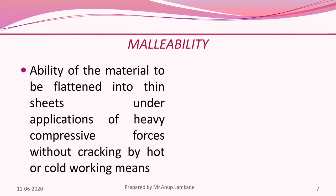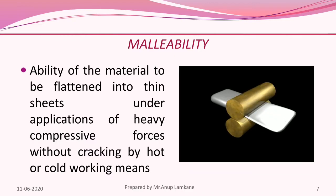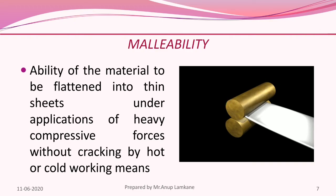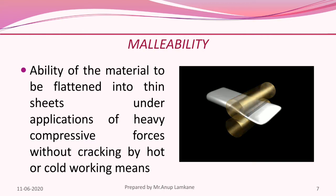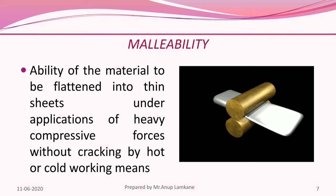For example, when a silver object is passed through rollers, the size and shape of the object changes and it becomes a flat sheet.